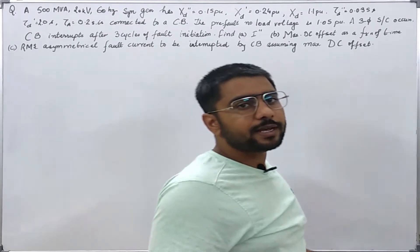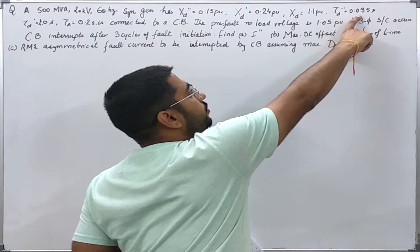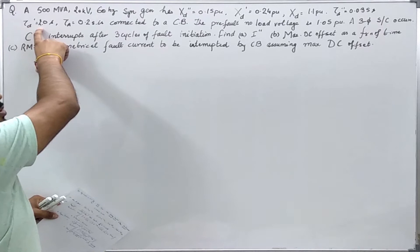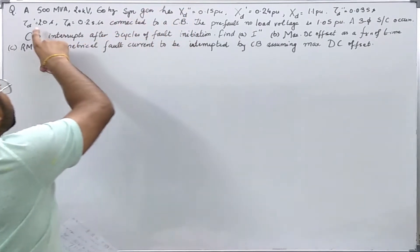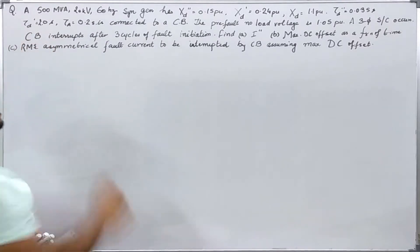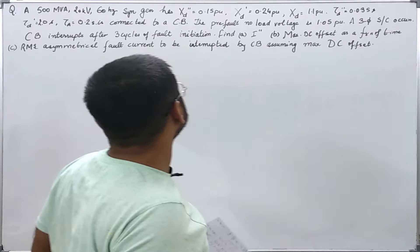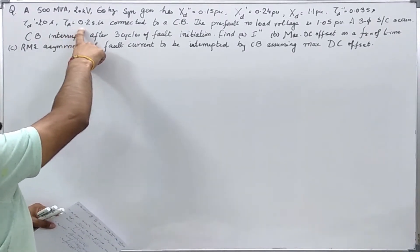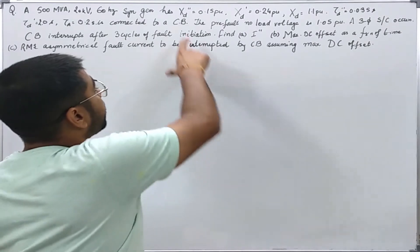We are also given various time constants. The sub-transient time constant is 0.035 seconds, the transient one is 2 seconds. You can see the difference - this is very small compared to the transient time constant because it depends upon the field winding which is highly inductive, and it depends upon the damper winding and the eddy currents. The armature winding is having a time constant of 0.2 seconds and this generator is connected to a circuit breaker.